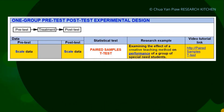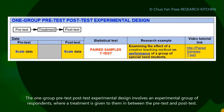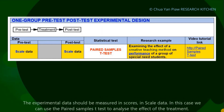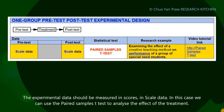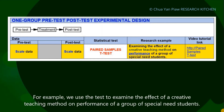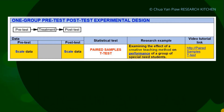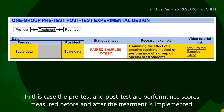Now we move to the experimental design. The one-group pre-test/post-test experimental design involves an experimental group of respondents where a treatment is given between the pre-test and post-test. The experimental data should be measured in scale data. In this case, we can use the paired sample t-test to analyze the effect of the treatment. For example, we use the test to examine the effect of a creative teaching method on the performance of a group of special needs students, where the pre-test and post-test are performance scores measured before and after treatment.